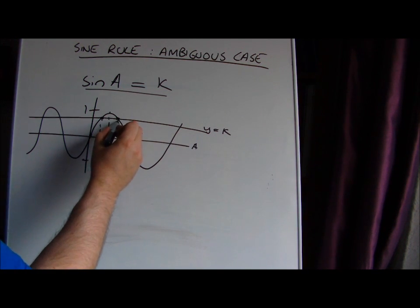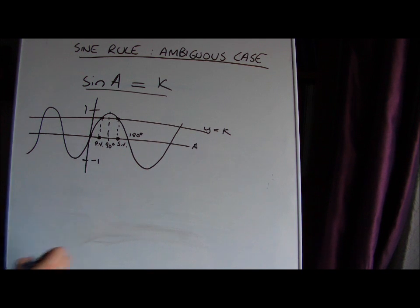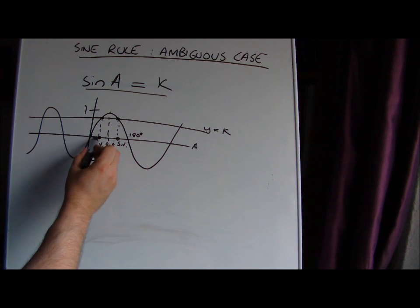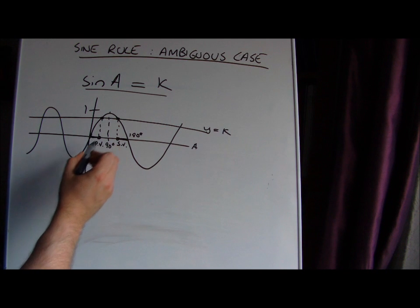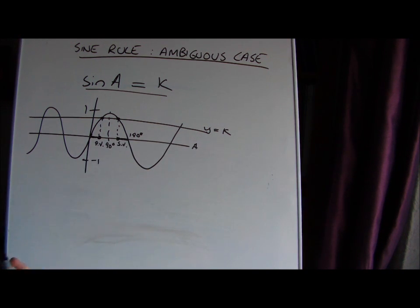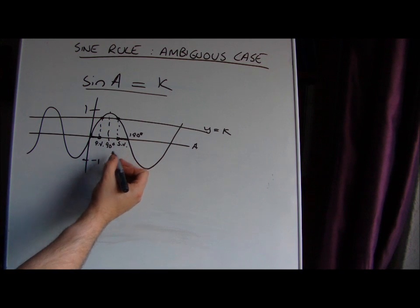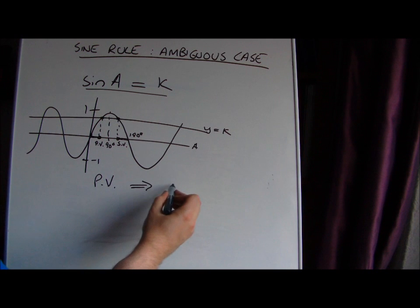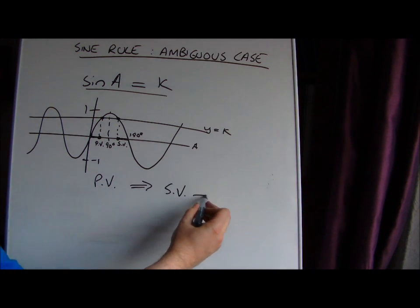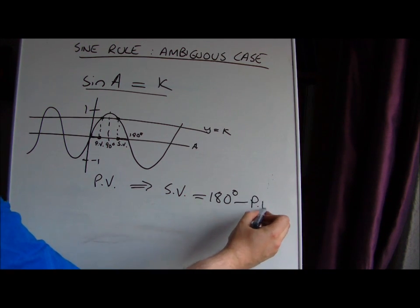However, there's also another angle which has the same sine and we call that the secondary value. You can calculate the secondary value by noting the symmetry. If that was 30 degrees here, it must also be 30 degrees there, so that would be 150. When your calculator gives you a principal value, you also need to check the secondary value for the triangle and it's 180 degrees minus the principal value.